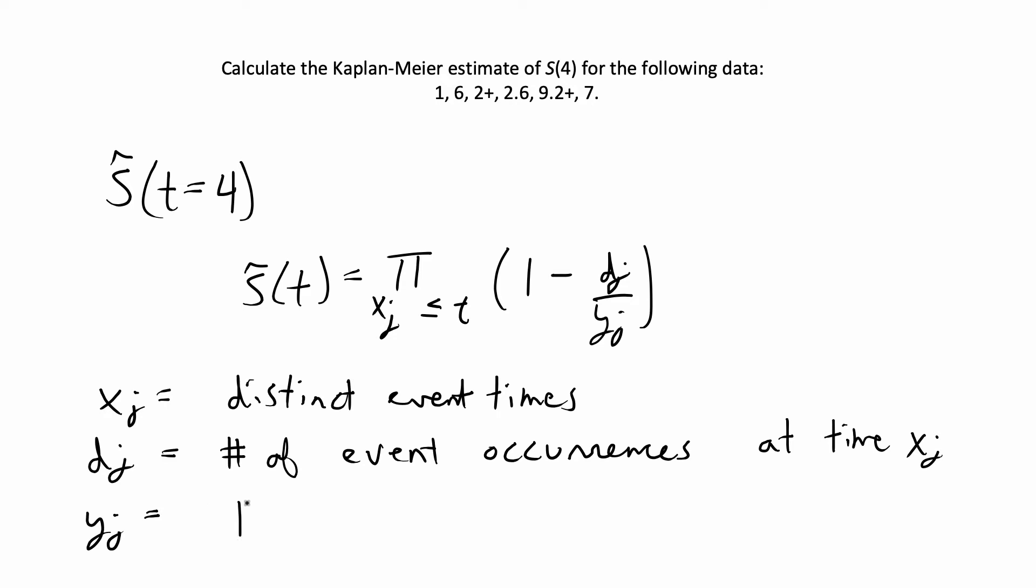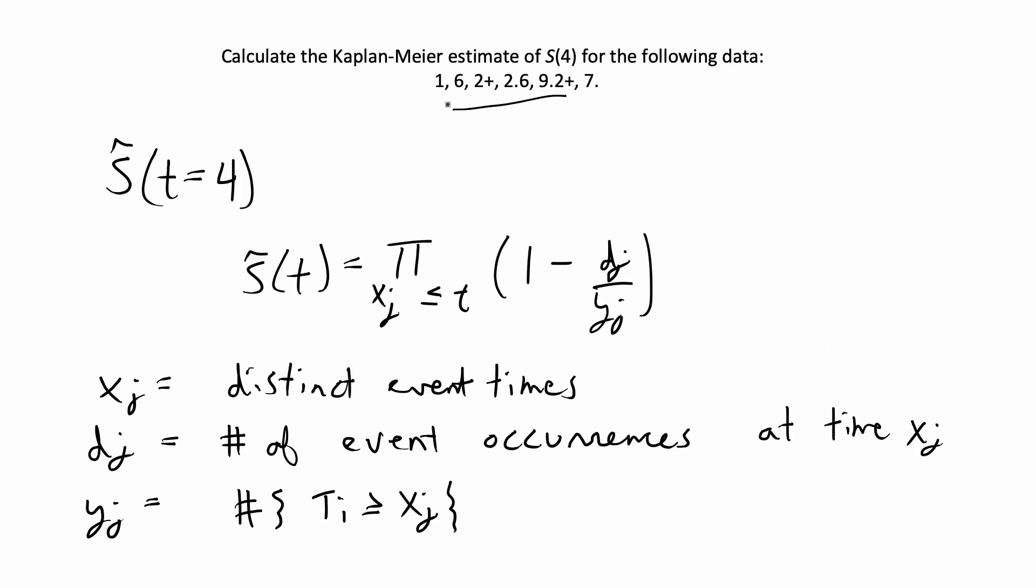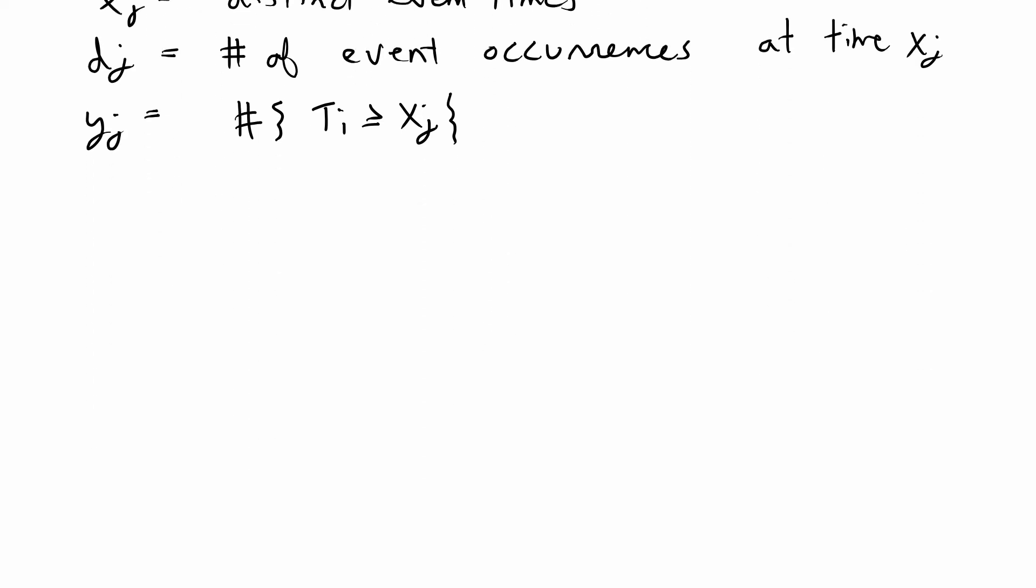I'm going to write that as the number of times that t of i is greater than or equal to x of j. From this formula all you have to do is plug in x of j, d of j, and y of j. To do that I'm first going to order my observations from smallest to largest.